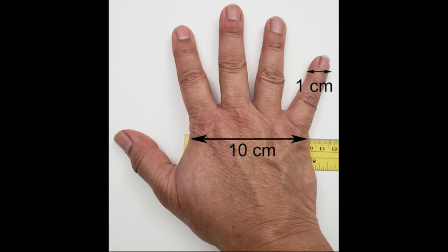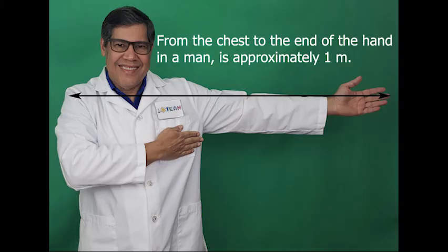An adult man hand measures 10 centimeters at the base of the fingers. The pinky is one centimeter. From the chest to the end of the hand in a man is approximately one meter.